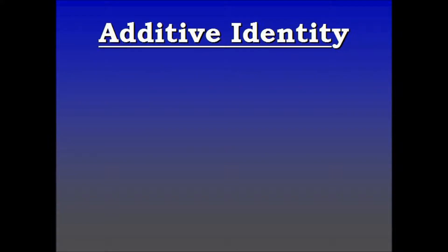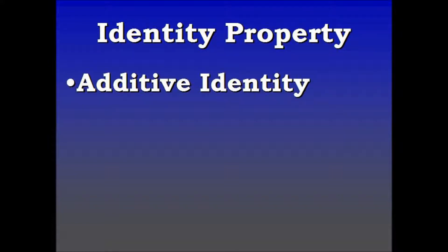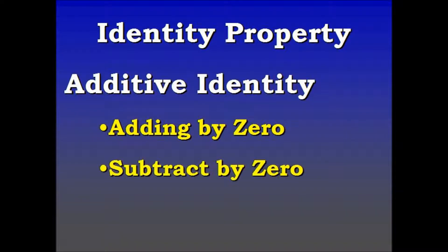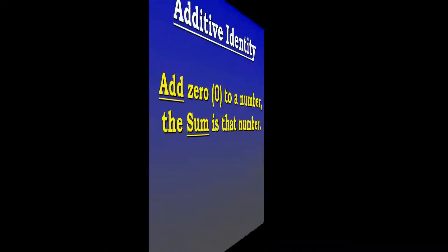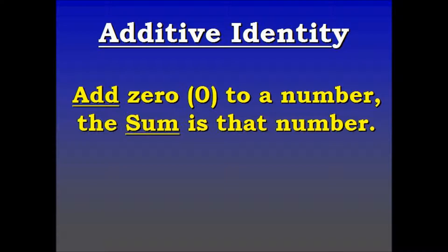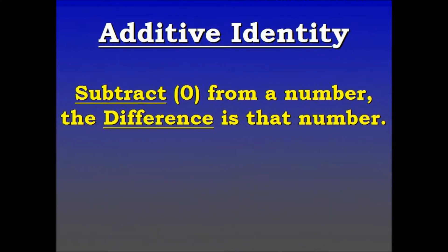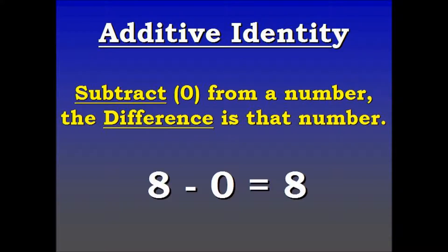We're going to begin with the additive identity, which deals with adding by 0 and subtraction by 0. To find the additive identity, you add 0 to a number and the sum is that number. For example, 7 plus 0 equals 7. You can also subtract 0 from a number — the difference is that number. For example, 8 minus 0 equals 8. That's how you find the additive identity.